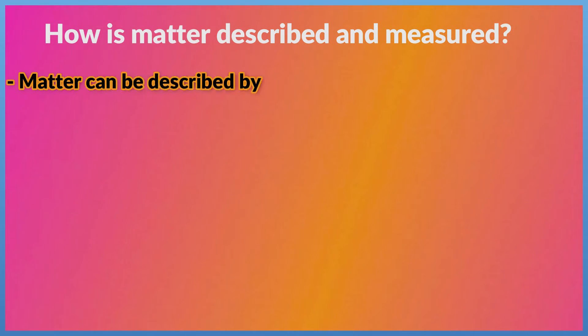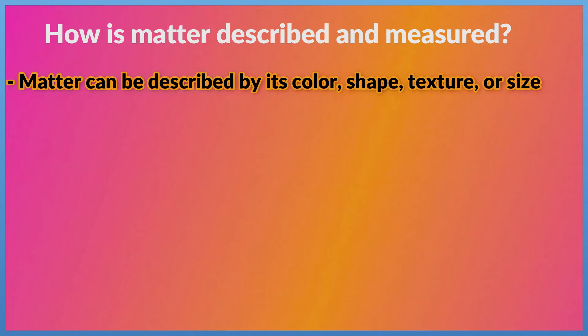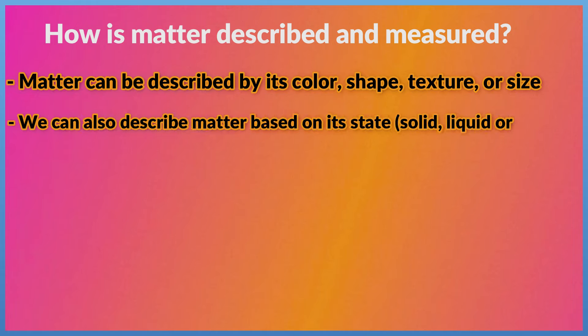Matter can be described by its color, shape, texture, or size. We can also describe matter based on its state: solid, liquid, or gas.